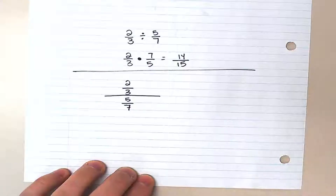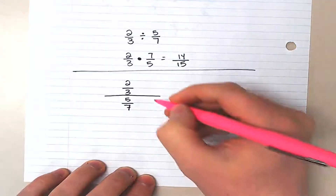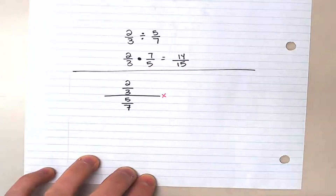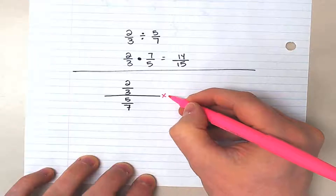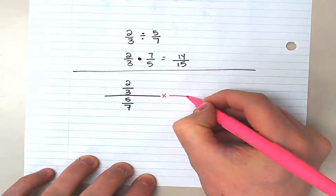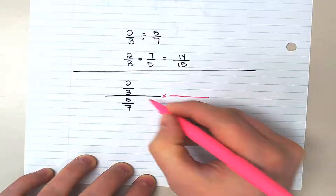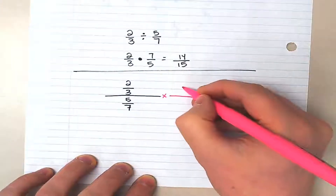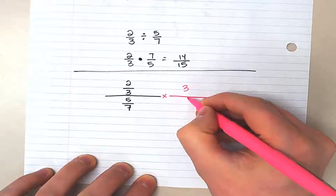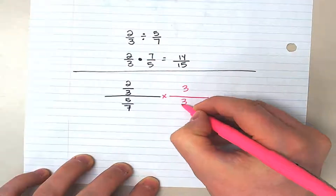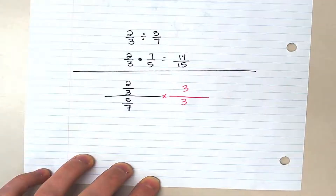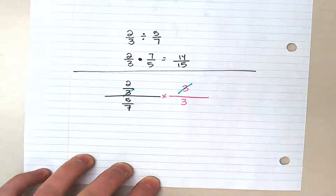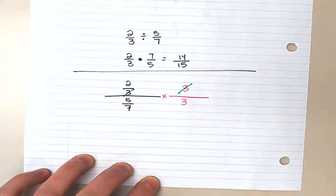In getting to a single denominator, we have to get rid of some denominators. So I'm actually going to multiply this entire fraction by three over three. What that is trying to accomplish is to cancel out one of the denominators — and we did that.